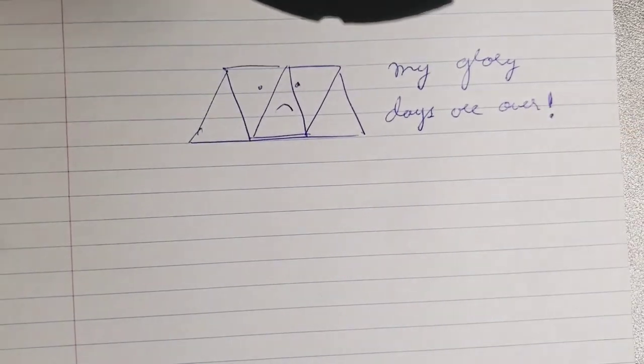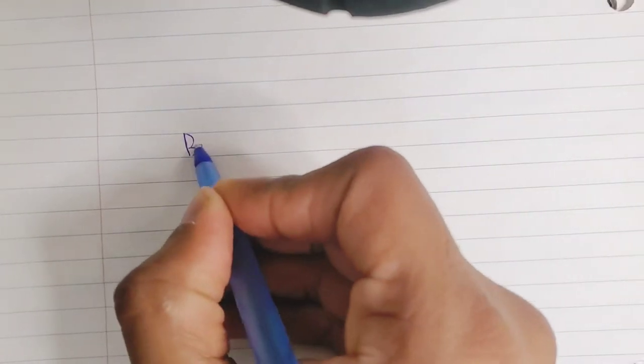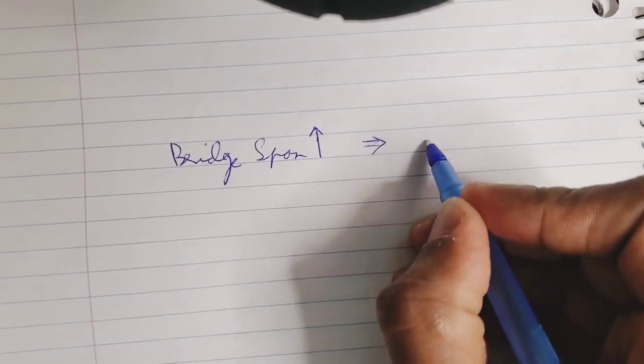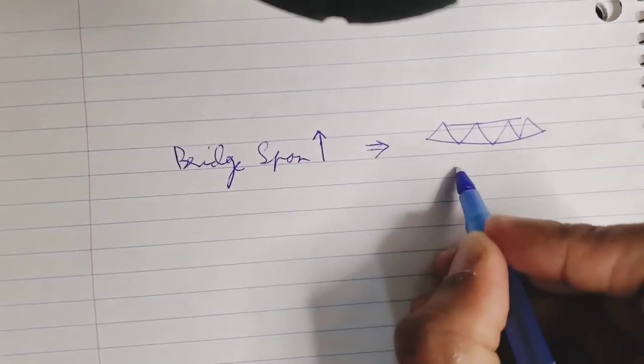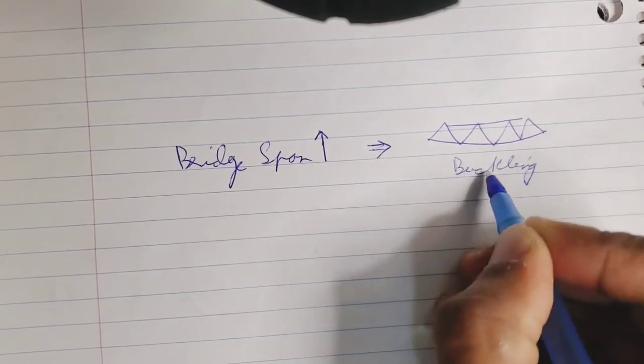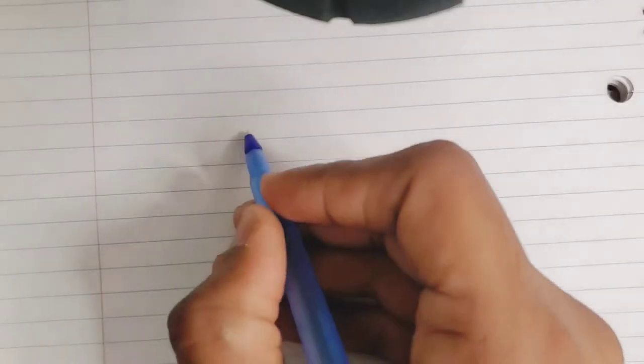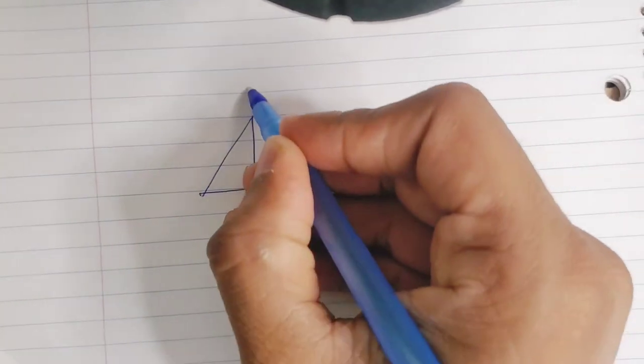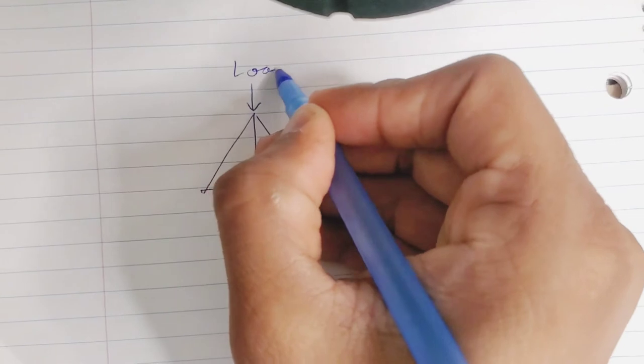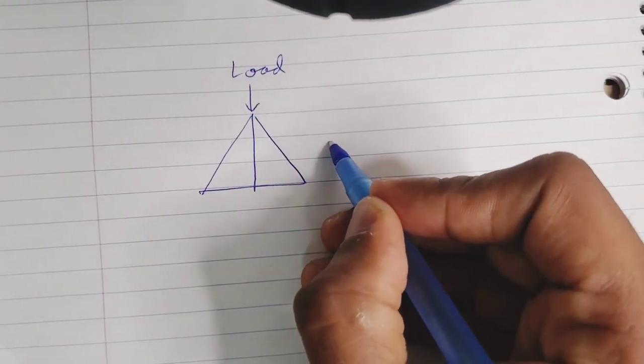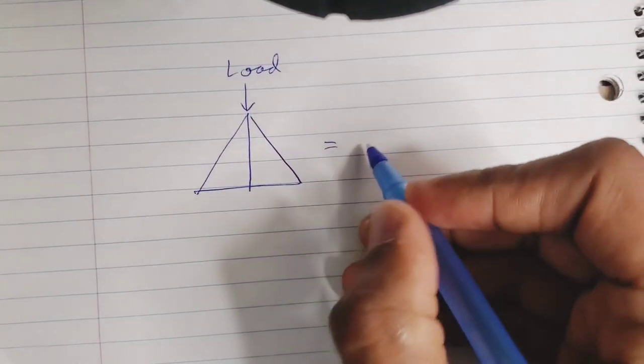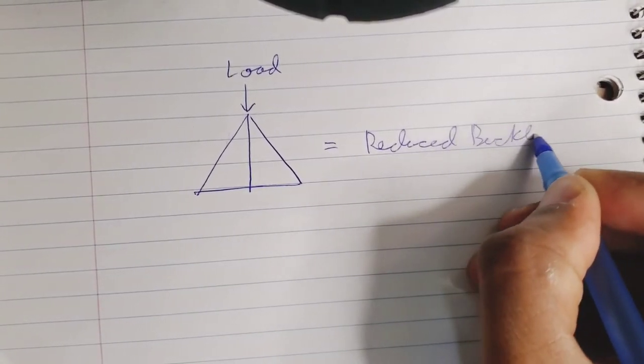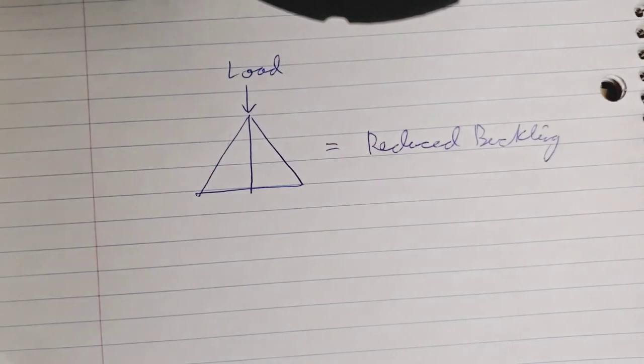As engineers began to construct Warren Truss bridges with increased spans, they observed the bridges began to buckle due to the increased length of the upper horizontal members. To solve this issue, a variant of the Warren Truss was introduced that involved an additional vertical member within the triangles. These vertical members do not carry a large proportion of the truss loads, but the main purpose is to stabilize the horizontal members against buckling.